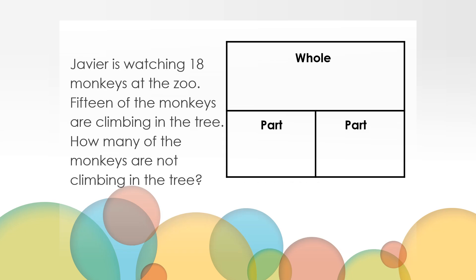Let's come back together and talk about some of the ways to go about solving this problem. When we hear a story problem like this, it's helpful to begin by thinking about the information we've been given and what the question is asking, or what we are trying to figure out. The whole-part chart can help us organize our thinking. You probably noticed that the whole or total number of monkeys at the zoo was 18, so we'll add that to our chart at the top where it says whole. The story told us that most — or to be exact, 15 — of the monkeys were climbing trees. This is not the whole group of monkeys; it's just a part, so we can fill it in one of the boxes labeled part. We're missing the other part, or we are trying to find out how many of the monkeys were in the other group that was not climbing in the trees.